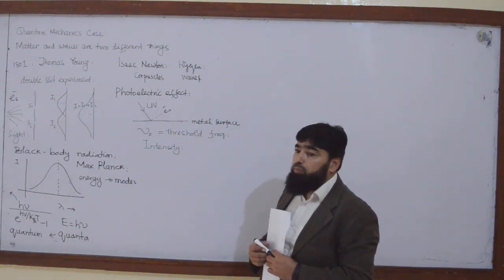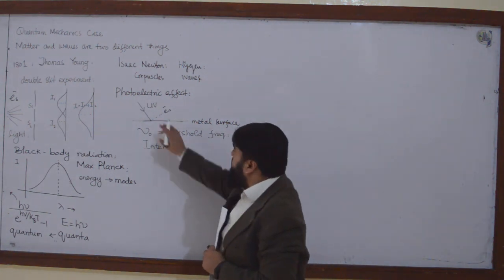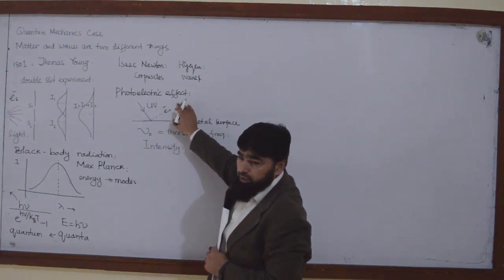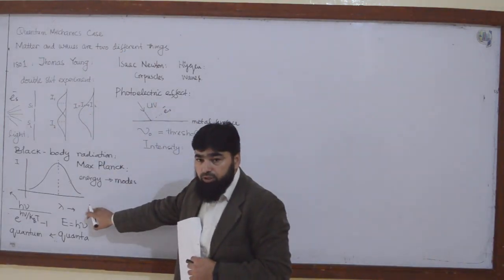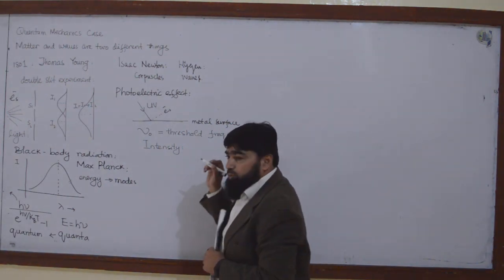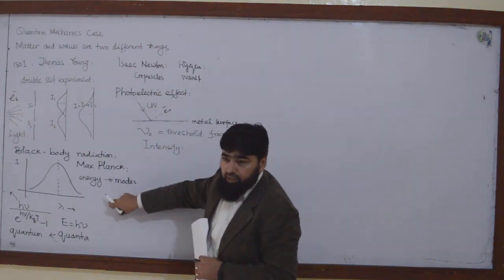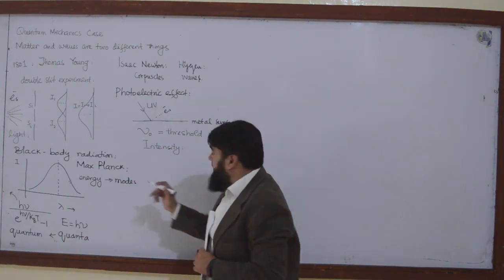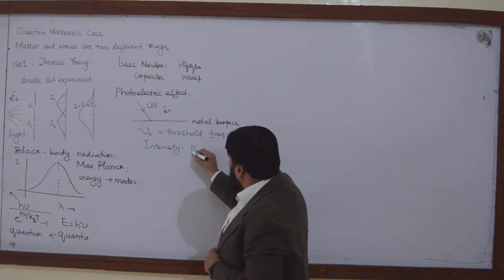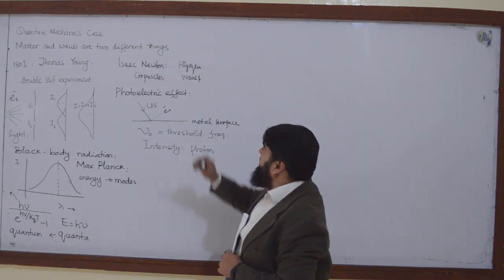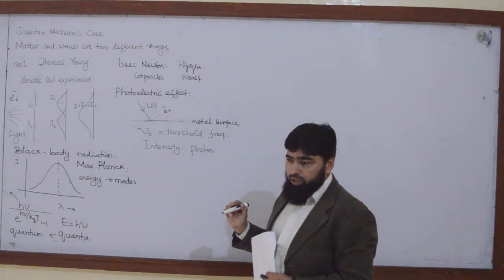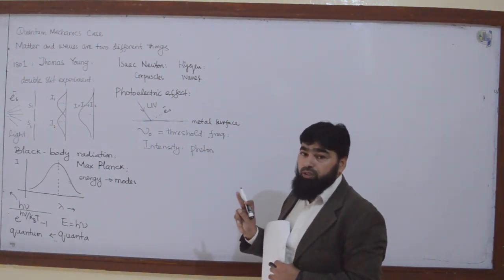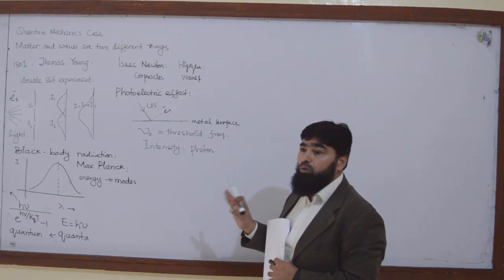This issue was solved by Albert Einstein, and for this he got the Nobel Prize. He used the same concept that light is a particle. Einstein called his particle a photon — it is the same quantum, which he called the photon. He established one principle which explained the whole photoelectric effect.